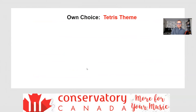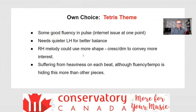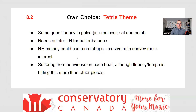The own choice piece — students can pick whatever they want. This is a great example: the Tetris theme from the video game. Video game music is incredibly popular among students at this point on exams. Some good fluency in the pulse. It needs a quieter left hand for better balance between the hands so we can hear the right hand melody a little better. The right hand melody could use more shape, more inflection, crescendo and diminuendo to convey more interest. Suffering a bit from heaviness on each beat, like some of the other music today, although the fluency and tempo is kind of hiding this a little more. Because of that, just into the 80s — 8.2 — just has to work out the heaviness and get some expression in there, and it'll probably be in the high 80s in no time.